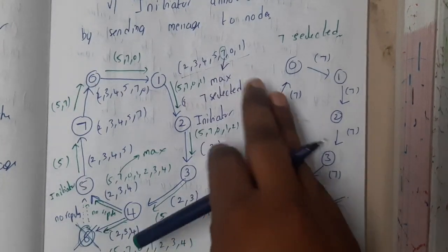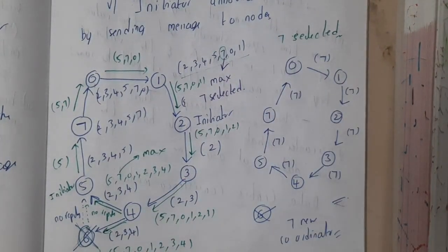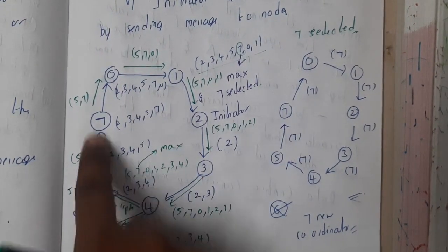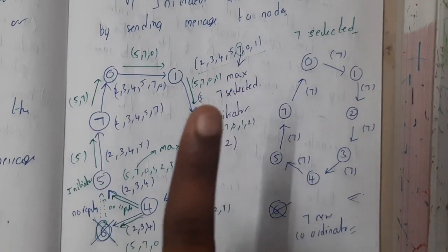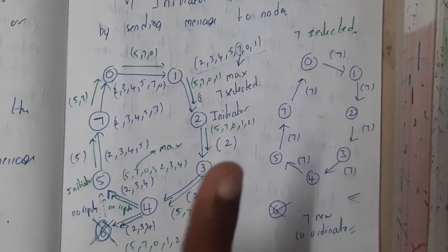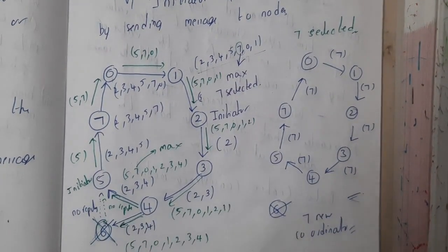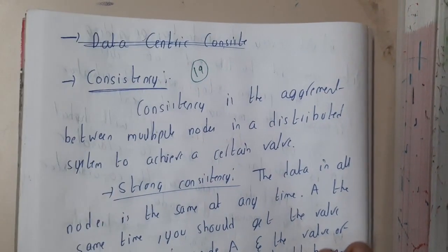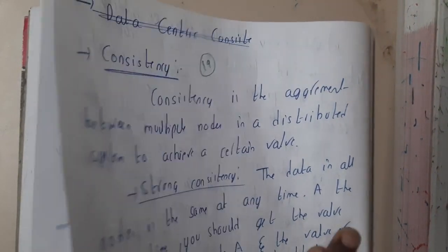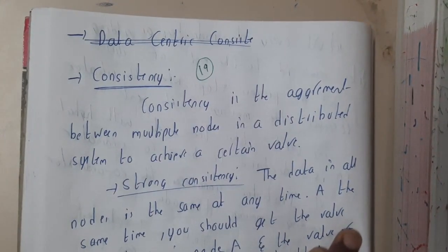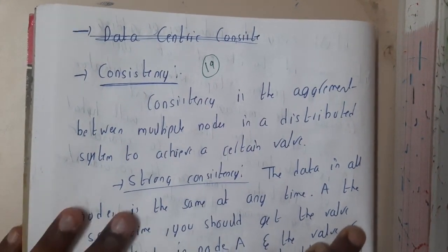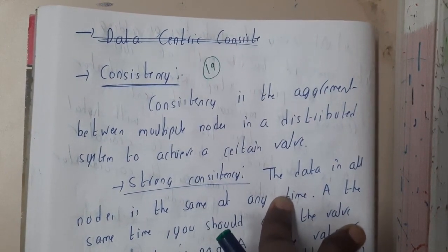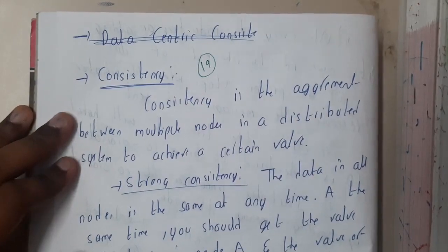One more thing you should remember is there will be a ring shape and it will be in one-way flow. It should not be in opposite directions - it will be a single-way flow. I hope everyone got a clear idea on mutual exclusion and ring concept, which are election algorithms. In the next lecture, we will be starting with a new topic about consistency. Let us meet in the next lecture. Thank you for watching.